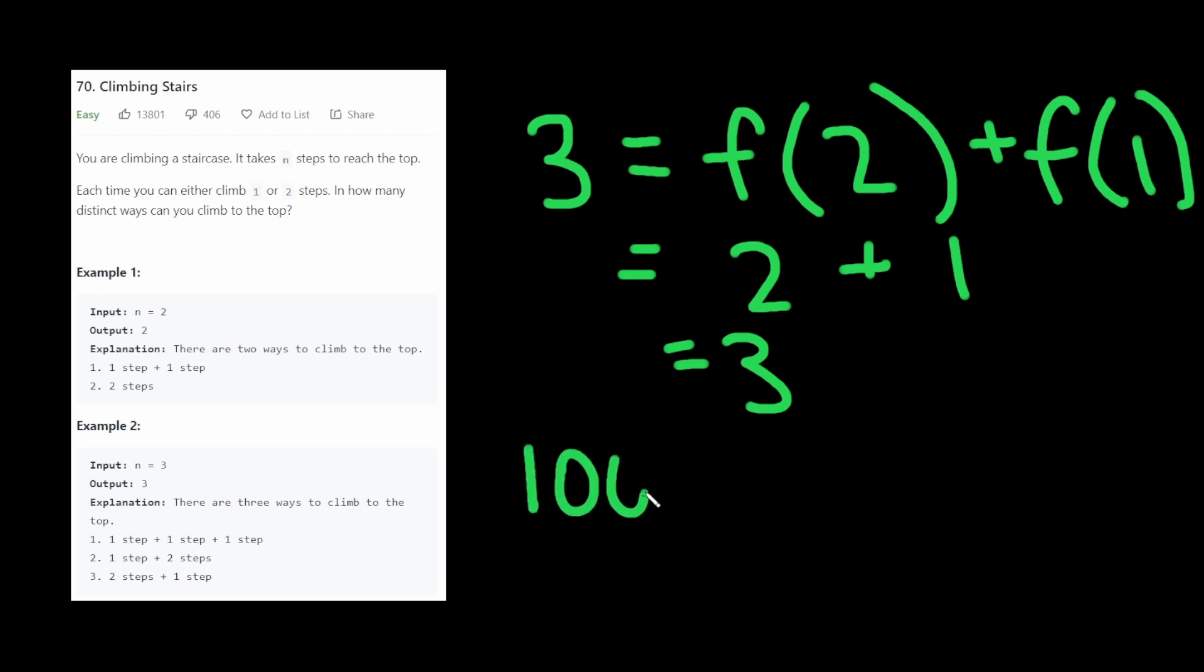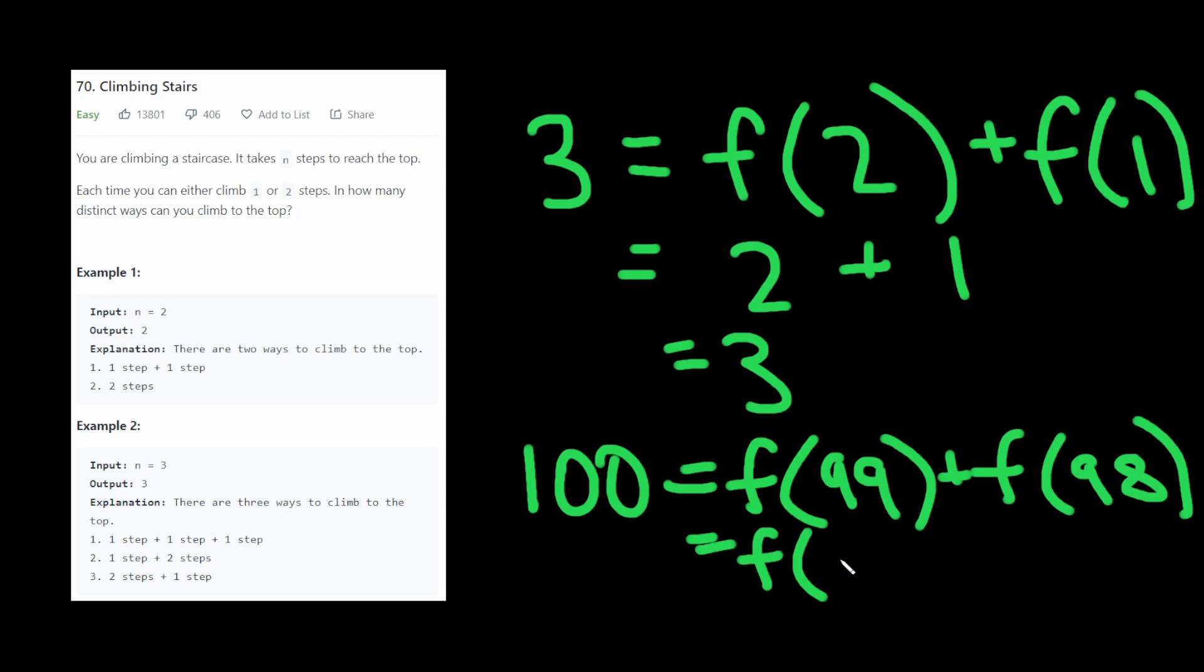Because if you're at a hundred, a hundred is equal to the function at 99 plus F at 98. And this is equal to F at 98 plus F at 97. And this is equal to F at 96 plus 97.